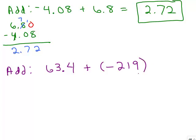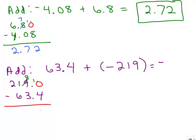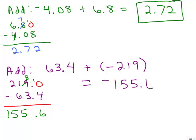We have 63.4 plus negative 219. We're adding with two opposite signs, and the negatives are going to win out — there are more negatives than positives, so the answer is going to be negative. We do the bigger number minus the smaller number, taking their difference: 219 minus 63.4. Remember to put in the extra zero. That gives us 4, 5, 155 — so the answer is negative 155.6.